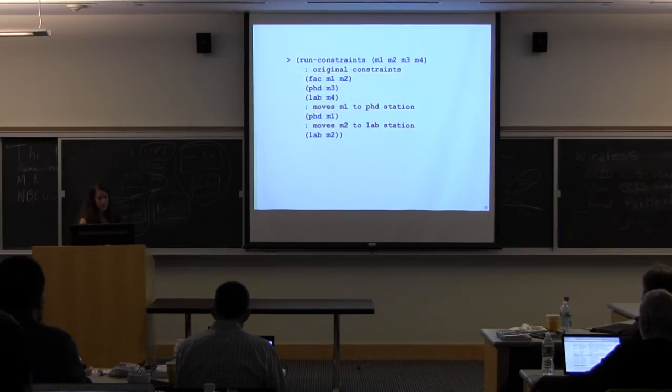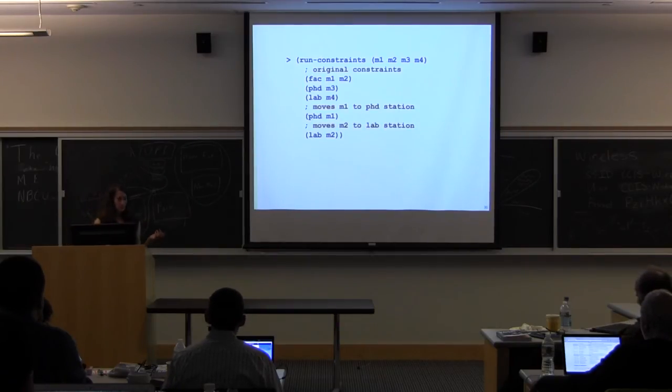So at the end, we can run these constraints, which basically just says I only care about the constraints at the end. And I have these four machines. I have M1, M2, M3, M4. The first two are faculty machines. The second is a PhD machine. And the third is a PhD machine. And the fourth is a lab machine.